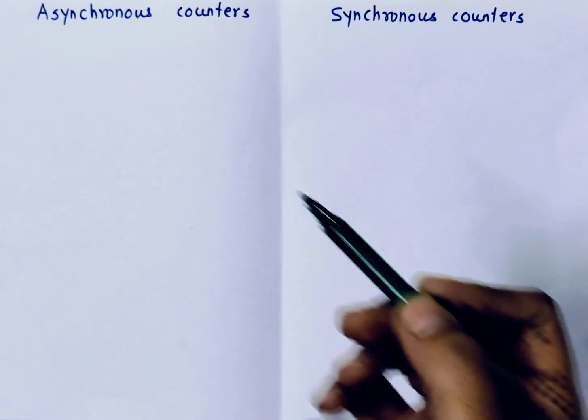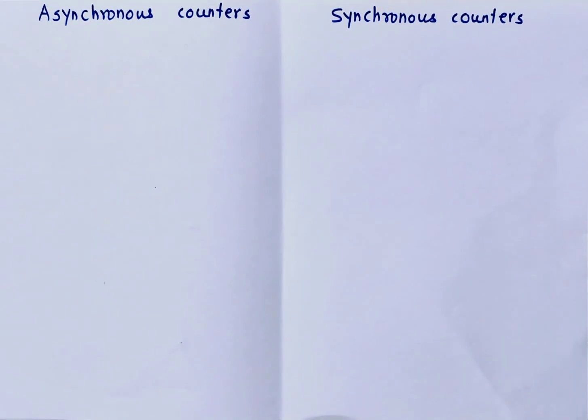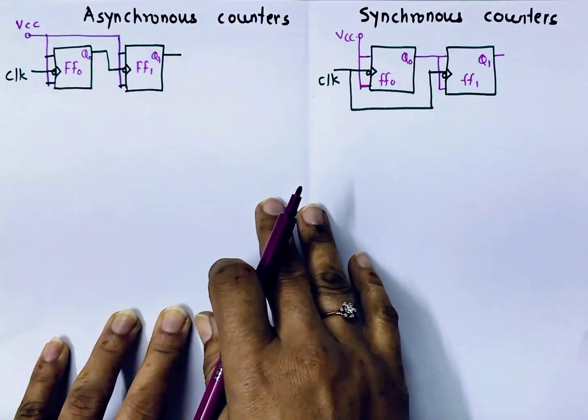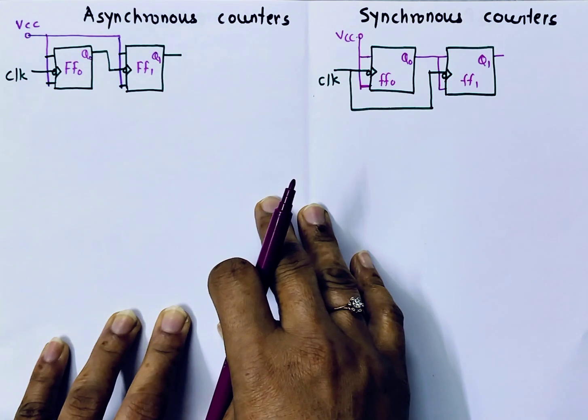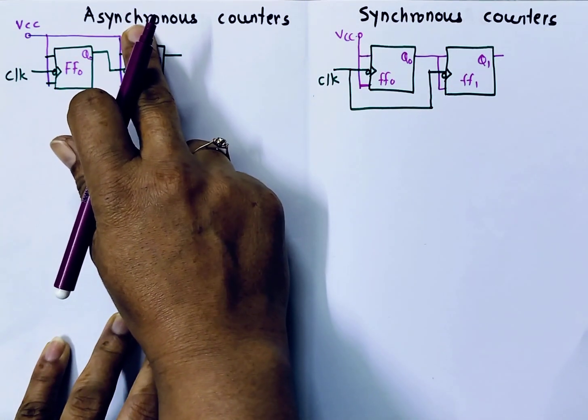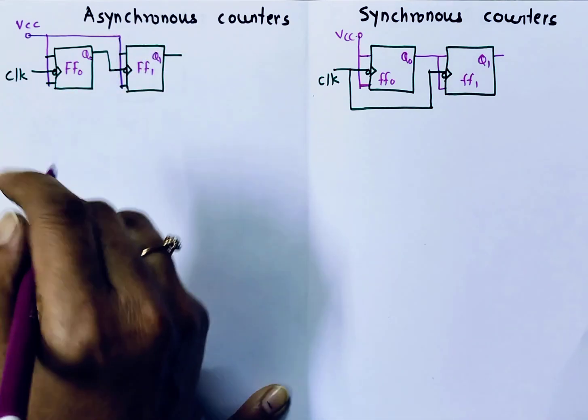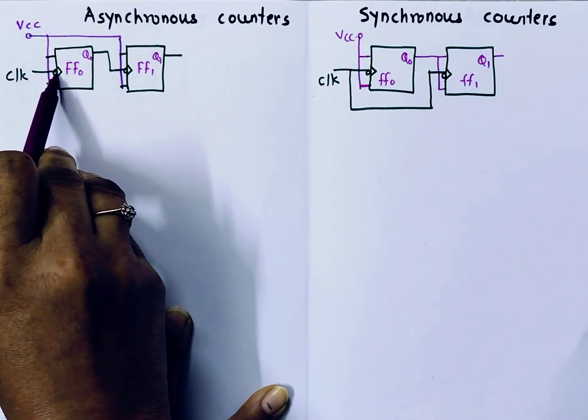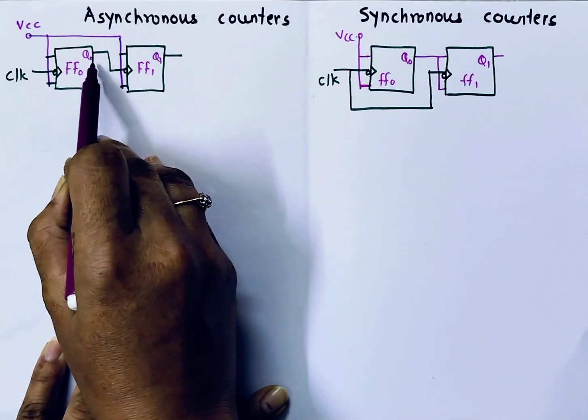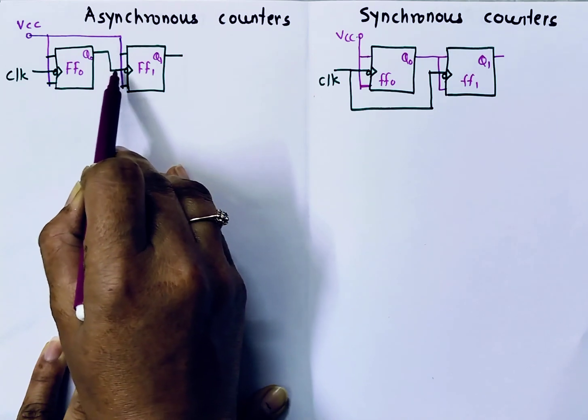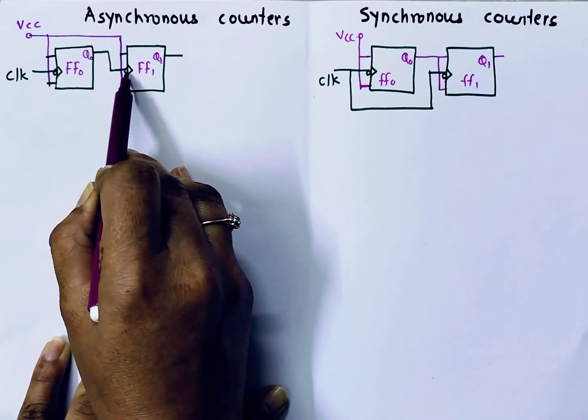Starting with Asynchronous Counters. In Asynchronous Counters, as its name indicates, it is asynchronous. It means external clock is given to only one flip-flop and output of first flip-flop acts as clock input to second flip-flop.